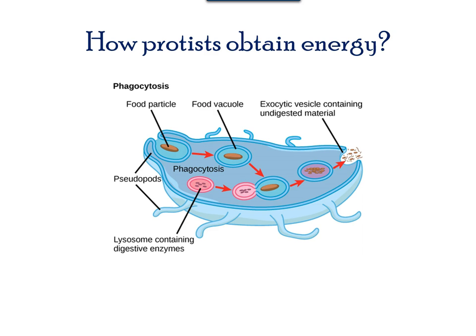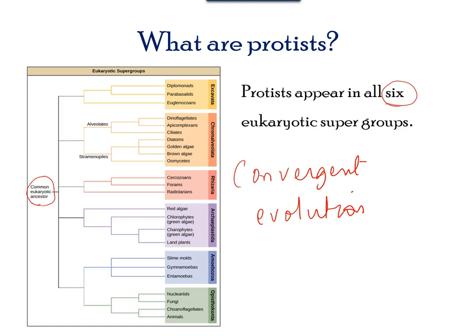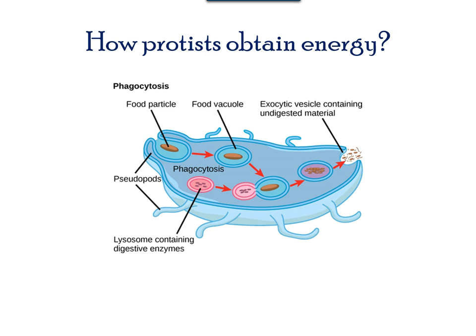Protists can be aerobic or anaerobic. Many are also photo-autotrophs since chloroplasts are present. Other protists can be heterotrophs and consume organic matter through a process called phagocytosis, in which the cell engulfs food particles, brings them inward, and pinches them off as a vesicle. The vesicle then fuses with lysosomes, which contain digestive enzymes and enhance breakdown of the food particle.